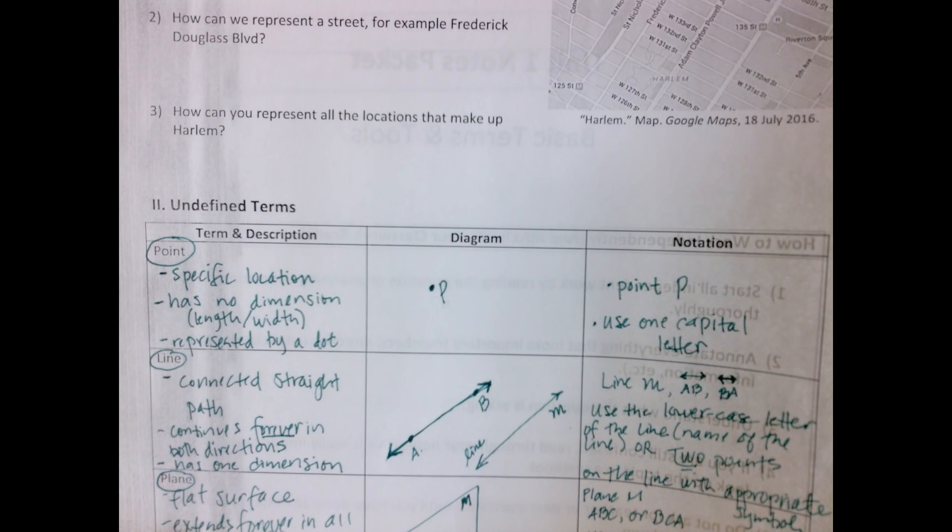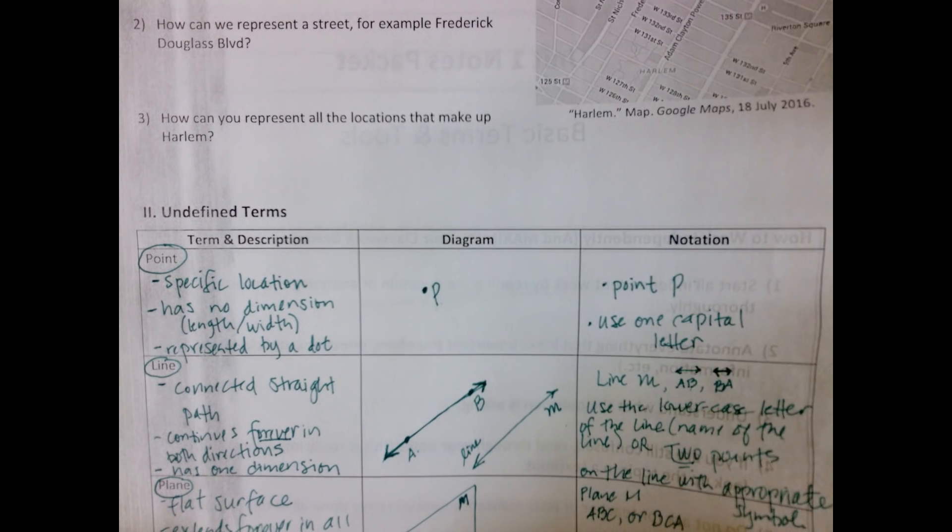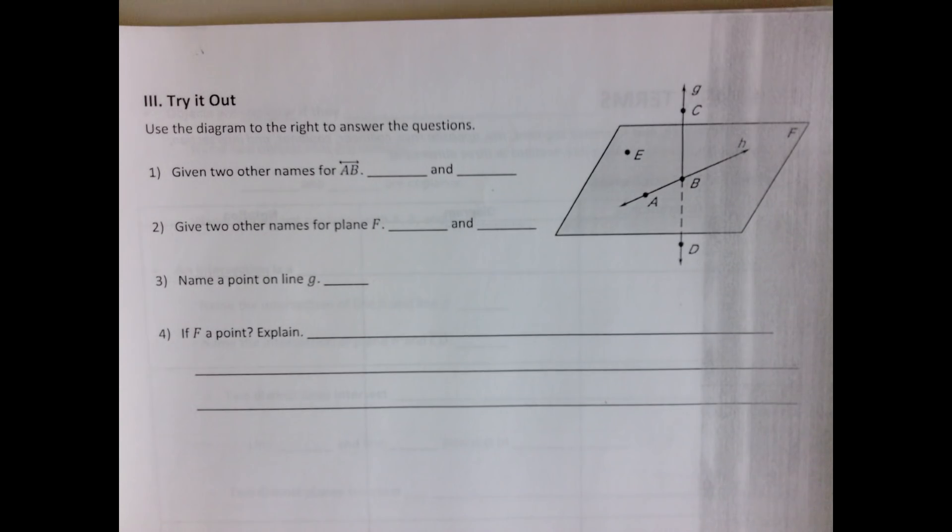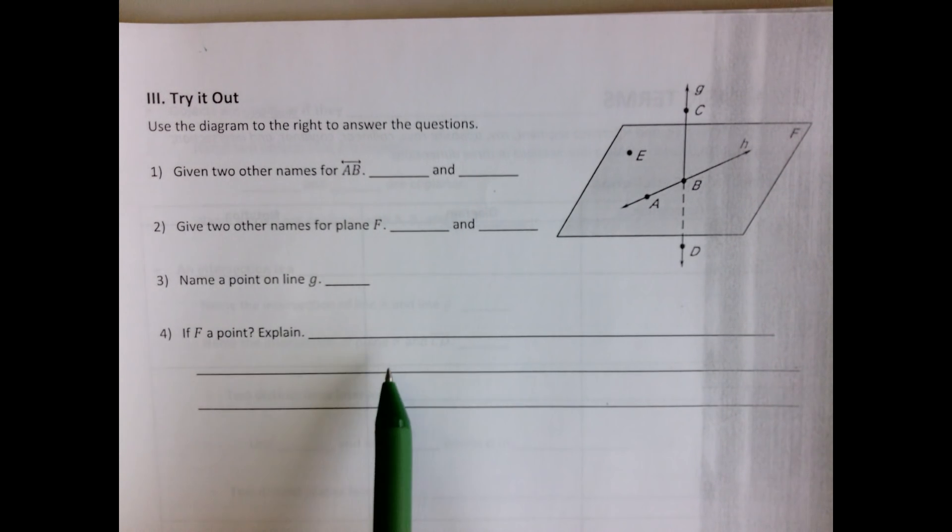Last thing you have to do is—again, you can pause the video if you missed any of this, and if you weren't able to make sense of my handwriting, you can always shoot me an email. The last thing you're going to do is Try It Out. You're doing this completely by yourself. This is part of your homework, and you'll see that with all the packets there's a Try It Out section, and that's always part of the homework. If you have any questions, leave them in the description section or shoot me an email. Have a good night.